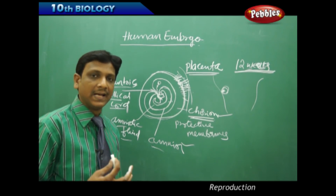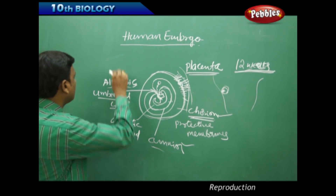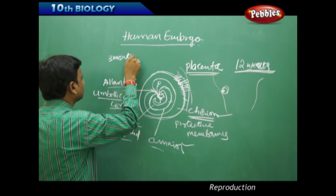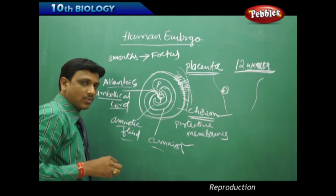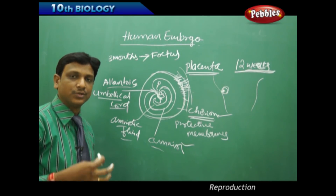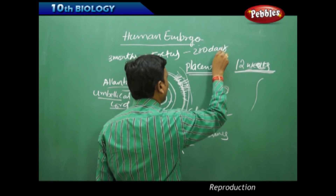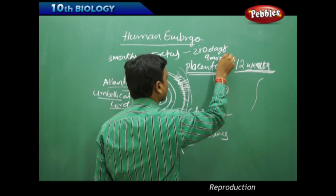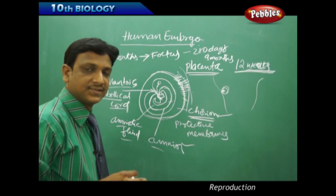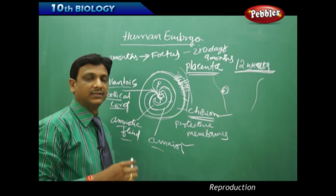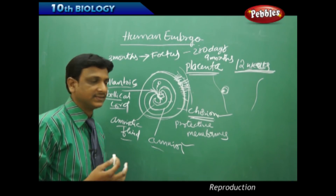These are the various membranes helping the embryo grow in the uterus. The embryo grows into a fetus at the age of 3 months of pregnancy — it is no more called an embryo but a fetus. It develops in the mother's womb for nearly 280 days or 9 months. This period is called the gestation period, after which birth takes place.